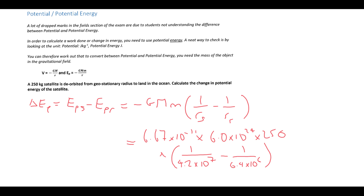I'll explain where the 4.2×10⁷ comes from shortly. Substituting in: G = 6.67×10⁻¹¹, M = 6×10²⁴, m = 250 kg, with the geostationary orbit radius 4.2×10⁷ m and Earth's surface radius 6.4×10⁶ m. This gives minus 13 gigajoules. It's come from further away to closer to the surface, so a negative answer is expected, and it's a very large value because we have a very large object moving in the field of an even bigger one.